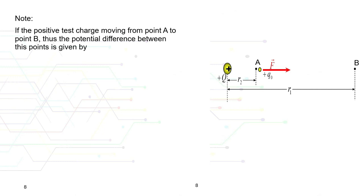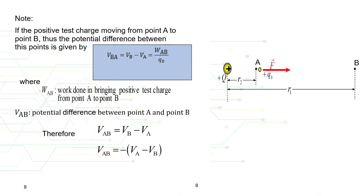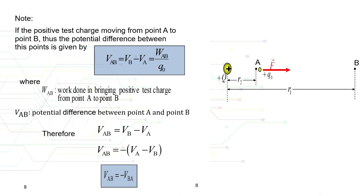If a positive test charge moves from point A to point B, the work done W_ab represents the work done in bringing the positive test charge from point A to point B, and Vab is the potential difference between A and B. Therefore, Vab = Vb − Va, or equivalently Vab = −Vba. By analogy, for an object to have high potential energy, it must be placed at a high position, requiring work to be done on it — that's what we call potential. The difference in potential between two places is called the potential difference.